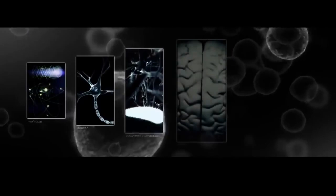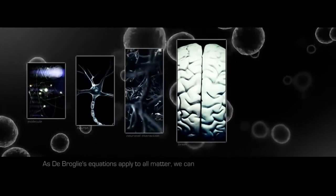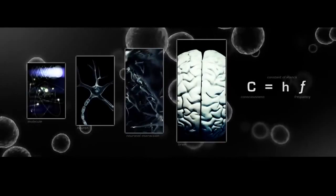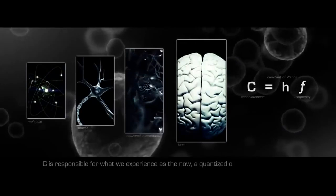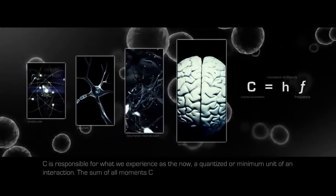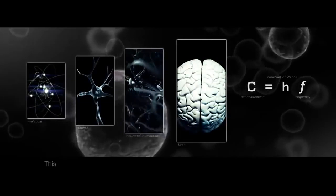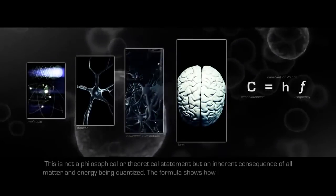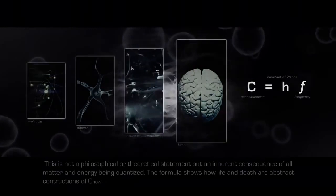As de Broglie's equations apply to all matter, we can fundamentally establish that C equals HF, where C stands for consciousness, H for the constant of Planck, and F for frequency. C is responsible for what we experience as the now, a quantized or minimum unit of an interaction. The sum of all moments C up till the current moment is what shapes our concept of life. This is not a philosophical or theoretical statement, but an inherent consequence of all matter and energy being quantized. The formula shows how life and death are abstract constructions of C.